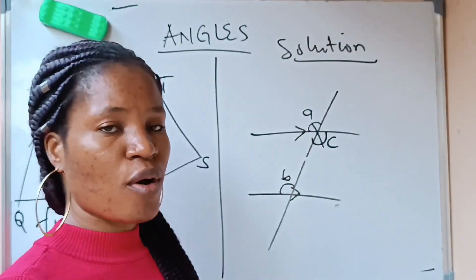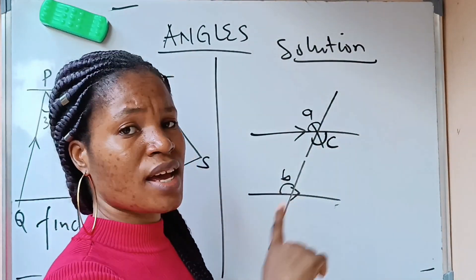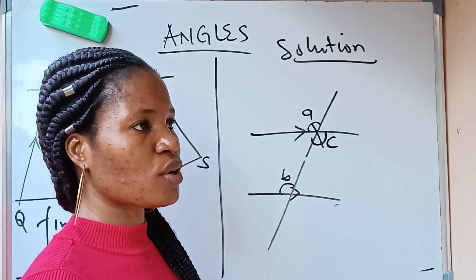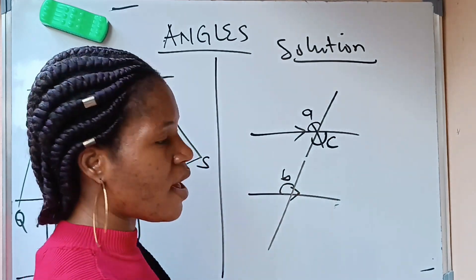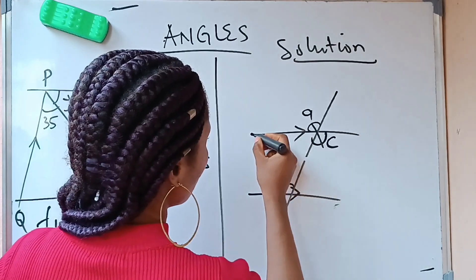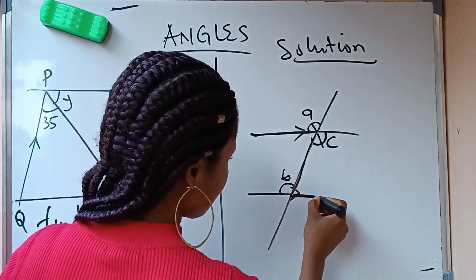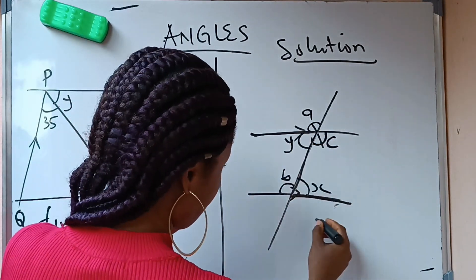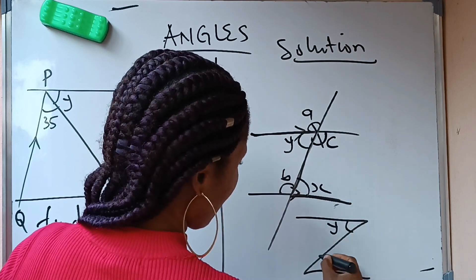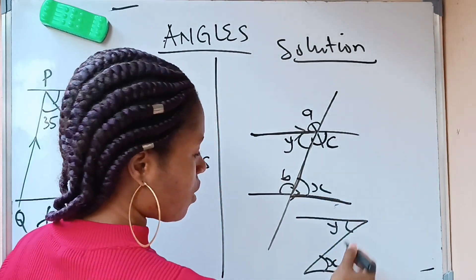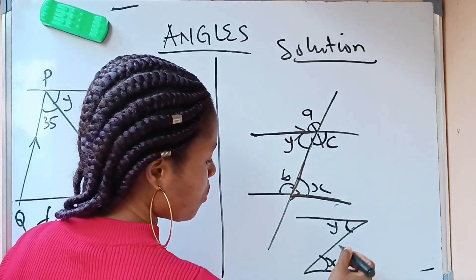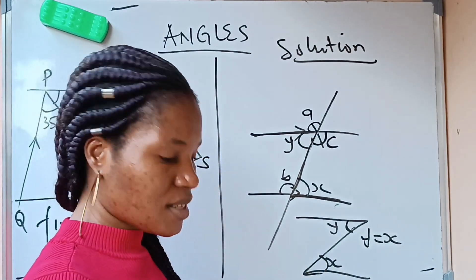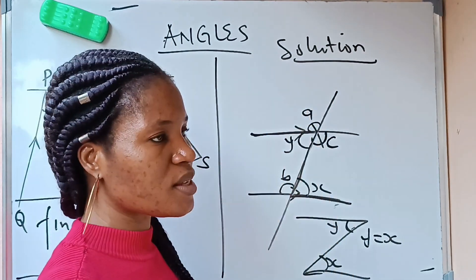The third type of angle is called an alternate angle. How do you identify it? You draw a Z crossing the two parallel lines. Assuming here is y and here is x — these two angles are alternate, formed at the pointed ends of the Z. So y is equal to x because they are alternate angles. These are the three types of angles you will see whenever you have two parallel lines in a drawing.